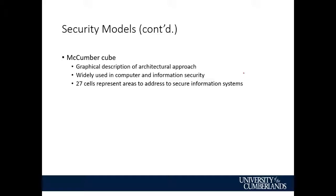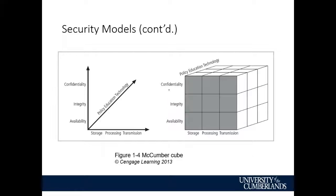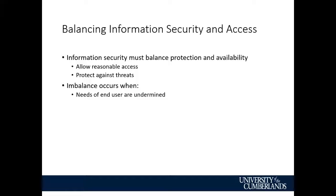Here's our security pyramid: we have to keep our data confidential, keep the integrity up, and keep availability. These are an important part of whenever we're designing security models. If the data is not available, it does no good. If we don't keep it confidential, that creates other issues. Policy, education, technology, storage, processing, and transmission — these are the areas we have to consider when looking at our information and how we get it where it needs to go.